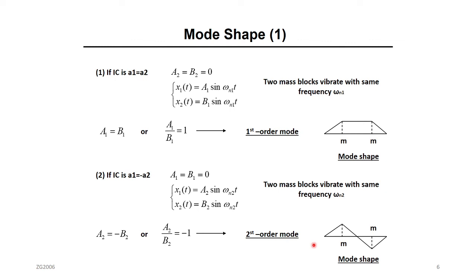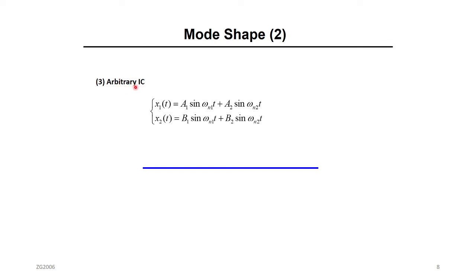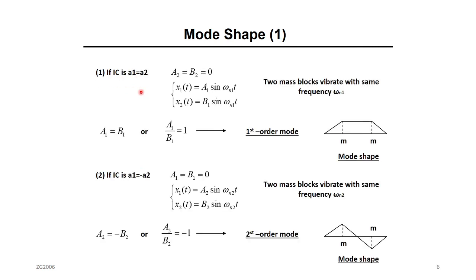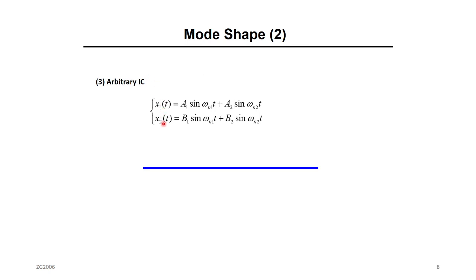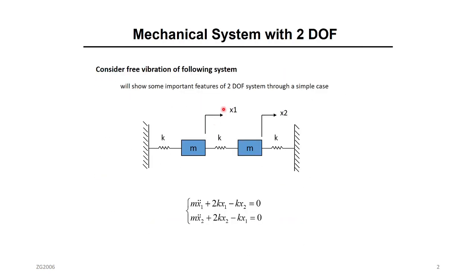What if you give arbitrary initial conditions — where A1 and A2 are not equal and not related? Both X1 and X2 will move in both natural frequencies simultaneously. We call this the mixed mode, or arbitrary mode shape. For example, if you give X1 one centimeter to the right and X2 three centimeters to the right or left, X1 will move at a frequency different from omega 1 and omega 2, and X2 will also move at a mixed frequency — neither omega 1 nor omega 2 alone.